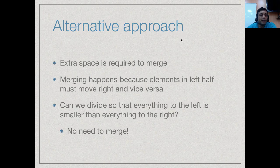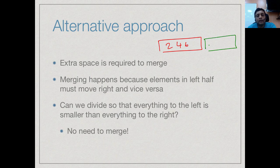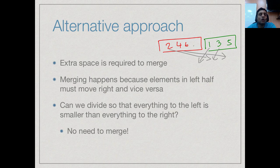The extra space requirement arises because during a merge, elements from the left half may need to go before elements from the right half and vice versa. For example, left = [2,4,6] and right = [1,3,5] requires interleaving from both sides. If instead we could guarantee that everything in the left part is smaller than everything in the right part before sorting each half, then after locally sorting each half, no merging would be needed.